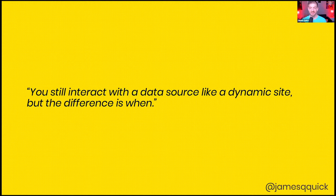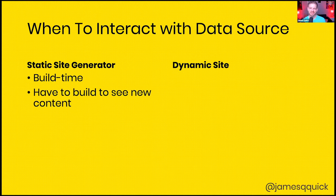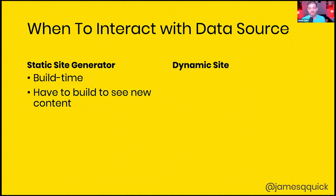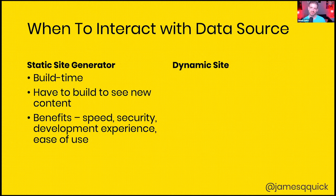Think about a traditional WordPress site: you visit a page, the server goes to the database for the blog info, brings that back, and sends back the HTML page. With a static site generator, that interaction with the data source takes place at build time. The implication is that whenever you add new content — like a new blog post — you have to trigger another build. Benefits of this approach include speed, since there's no real-time calculation; less server maintenance, which means fewer security risks; and a great developer experience where you check code in, it automatically builds, and you're done.